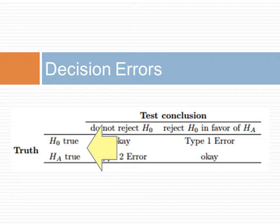There are two competing hypotheses: the null and the alternative. The null hypothesis is shown here as H sub 0. The alternative hypothesis is shown here as H sub A, where A stands for alternative.